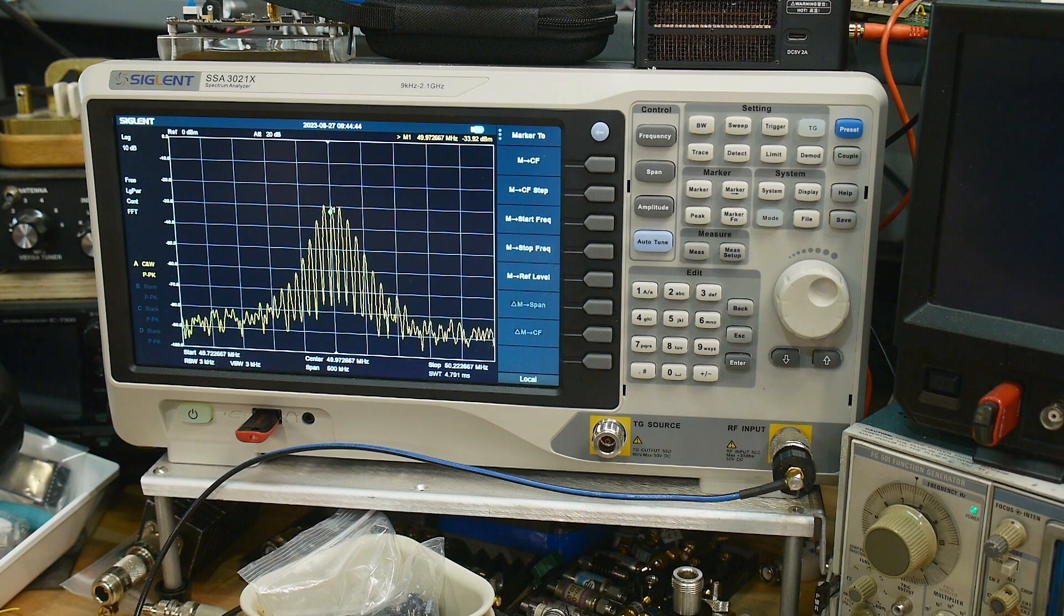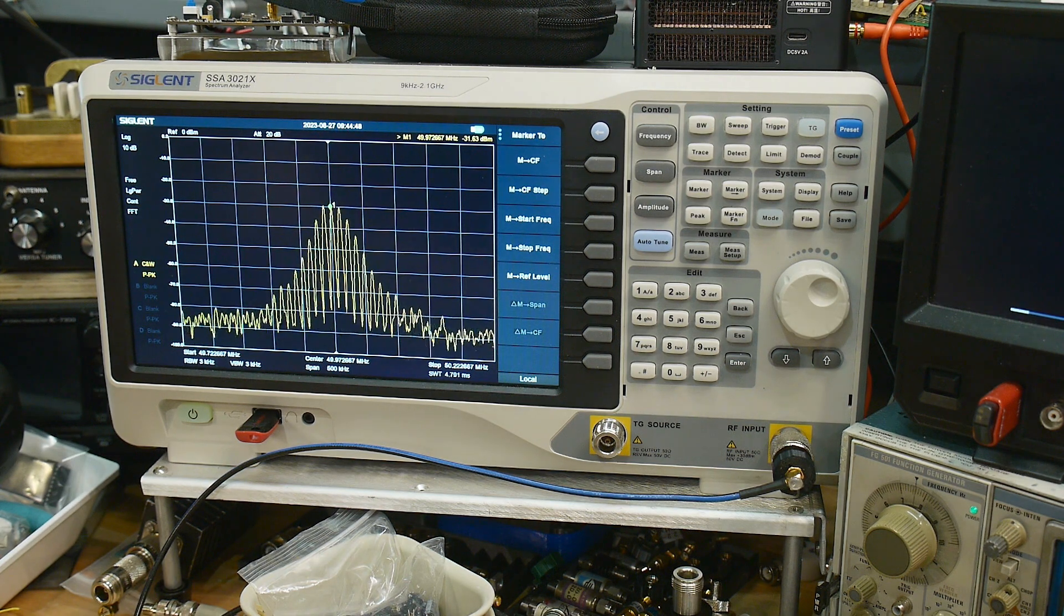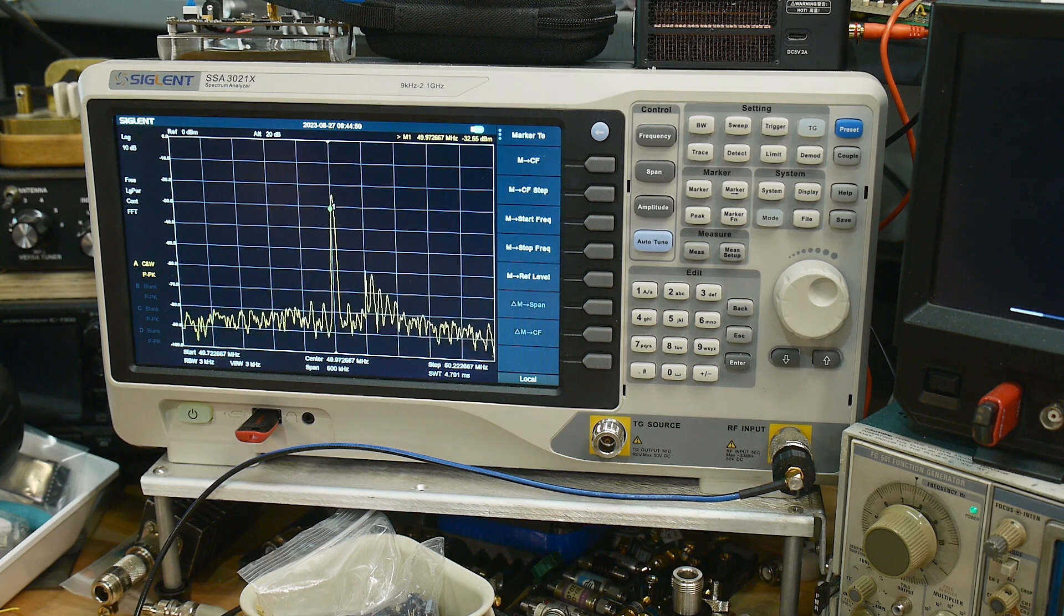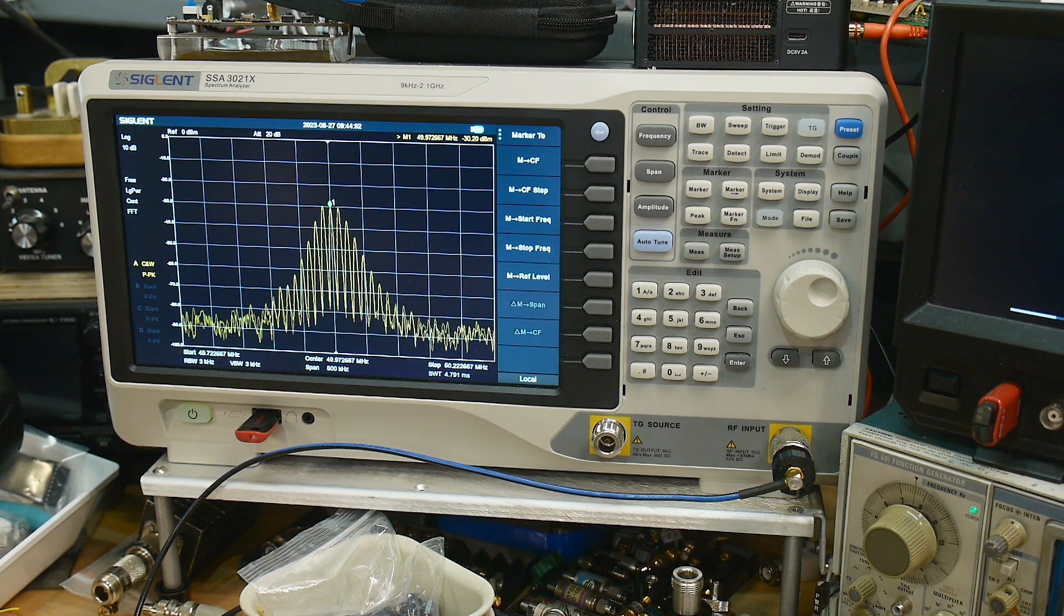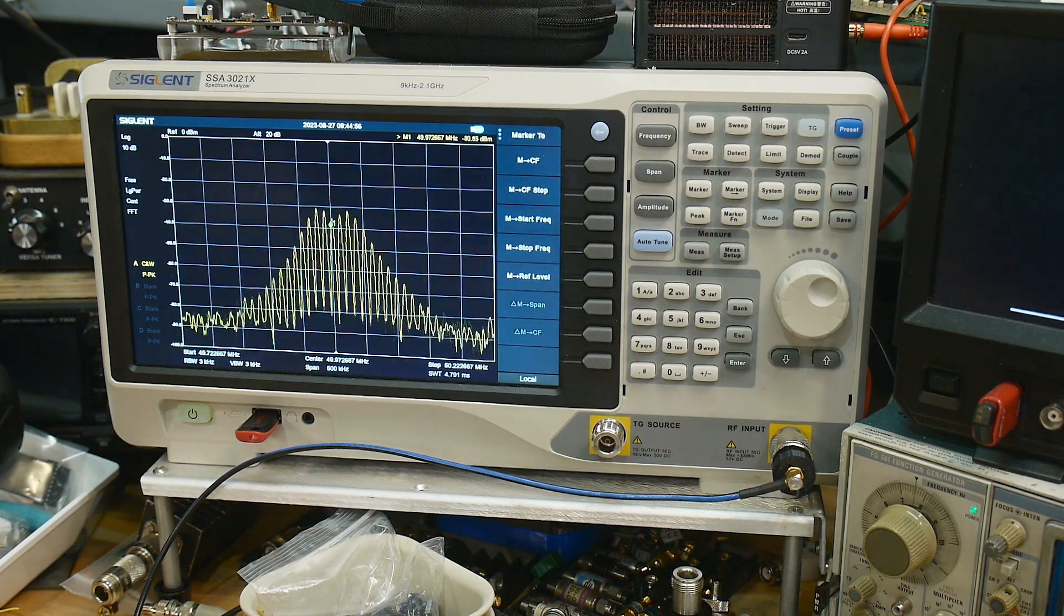The peak is actually right there. The marker to center frequency. There we go. 49.97266. Am I able to test this somehow without changing my setup? There's one channel. Here's the other channel. Oh, yeah. I'll just move my wire back and forth. Yeah, it's mono. It's definitely mono, I think.